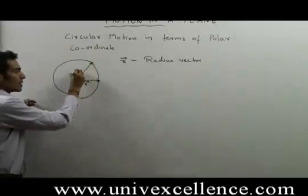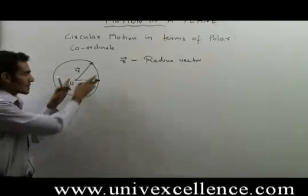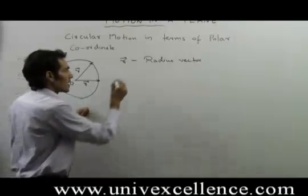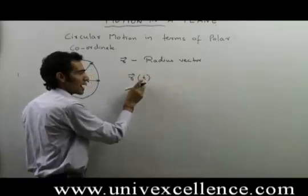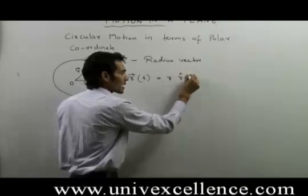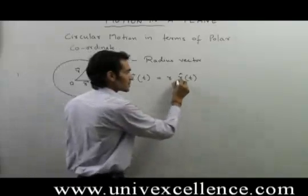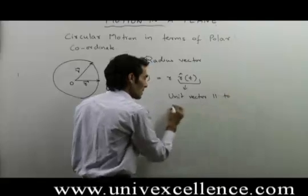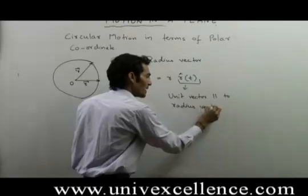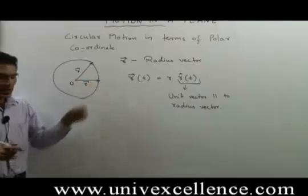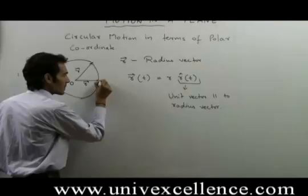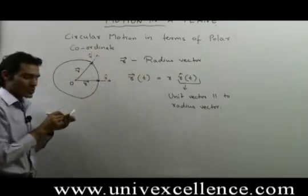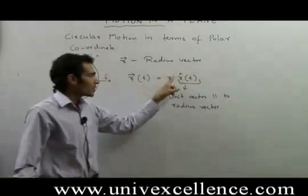The radius vector is changing with time. This can be written as r(t) = r · r̂(t), where r̂(t) is a unit vector parallel to the radius vector, pointing away from the origin or away from the center of the circle. This can be shown in this manner.